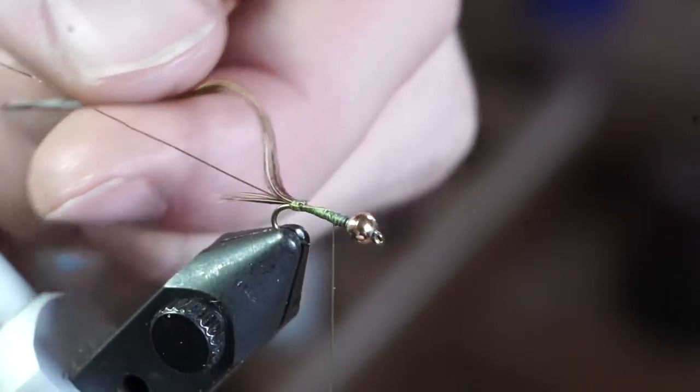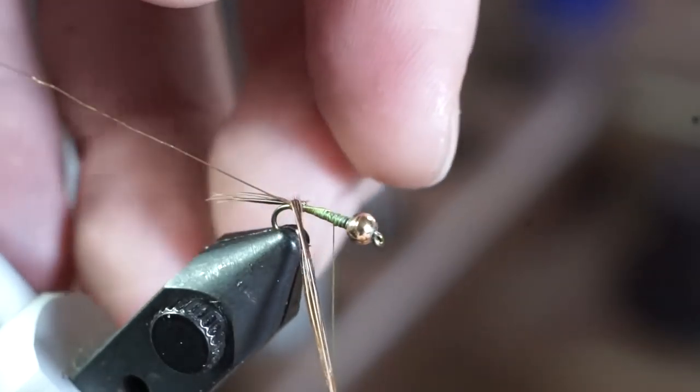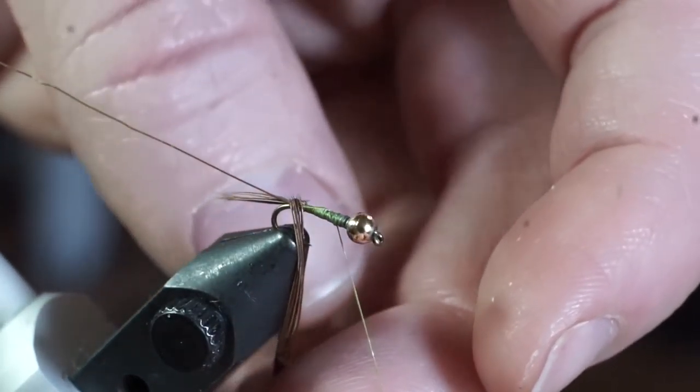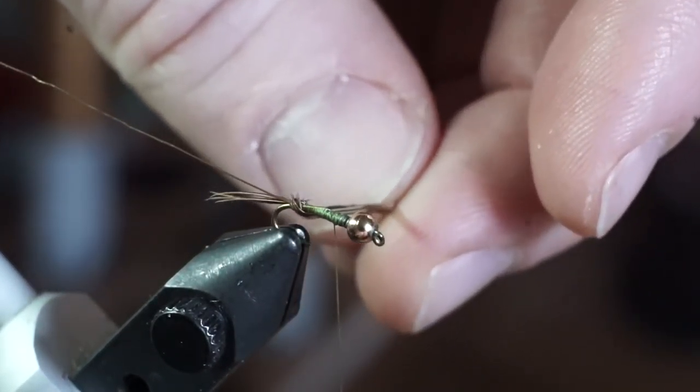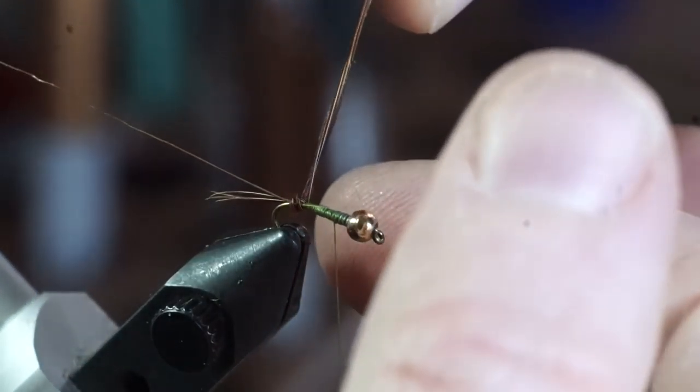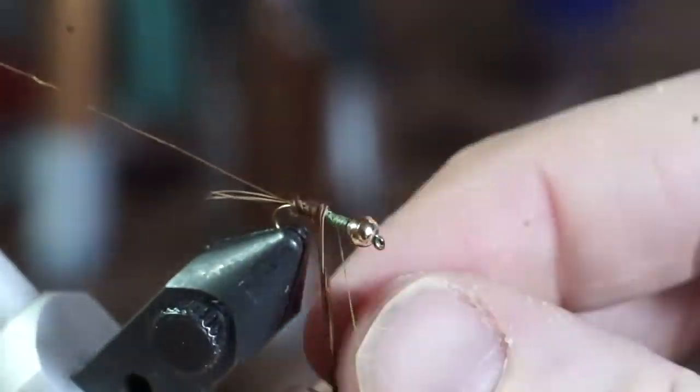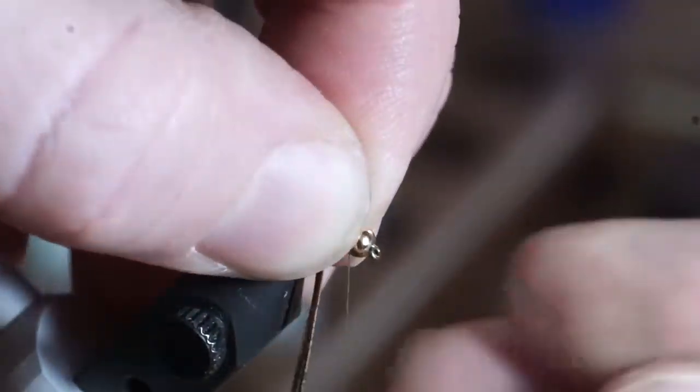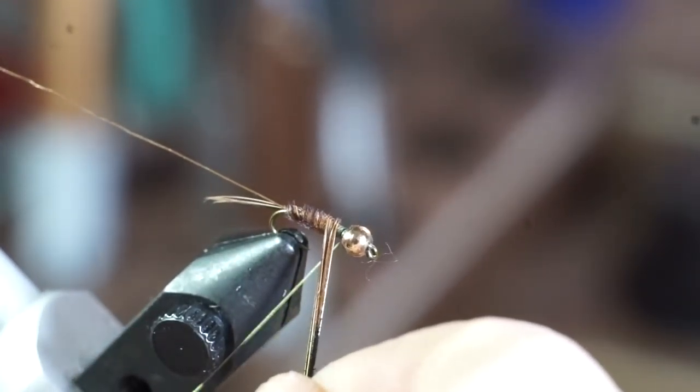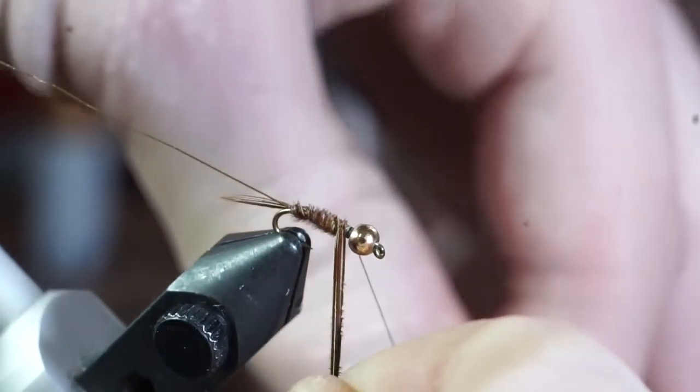Now proceed to wrap your pheasant tail up the hook shank with touching wraps. Do this in the opposite way you tie your thread, however this could be tricky. Once you reach just shy of the bead, about a hook eye size space, then capture the fibers and trim off the waste.